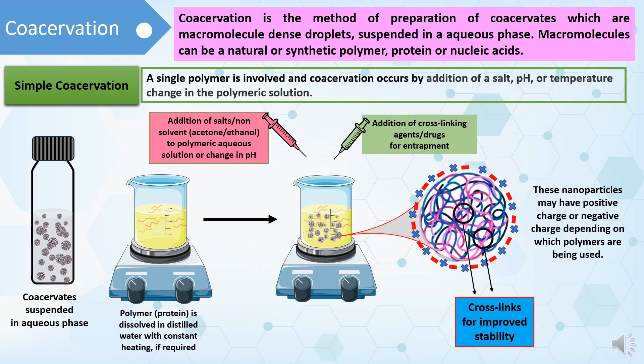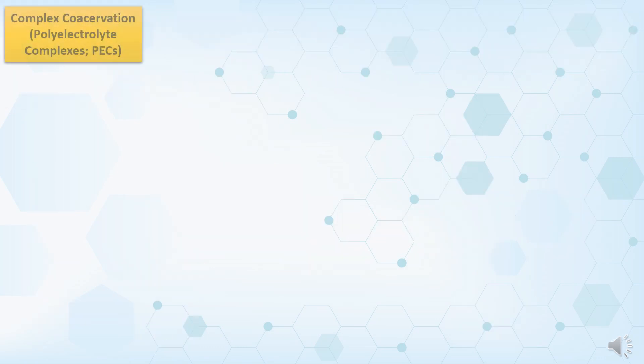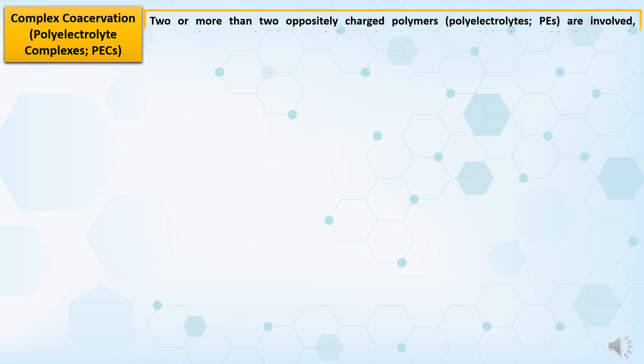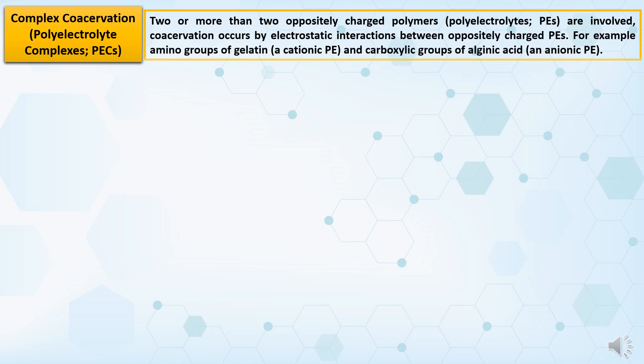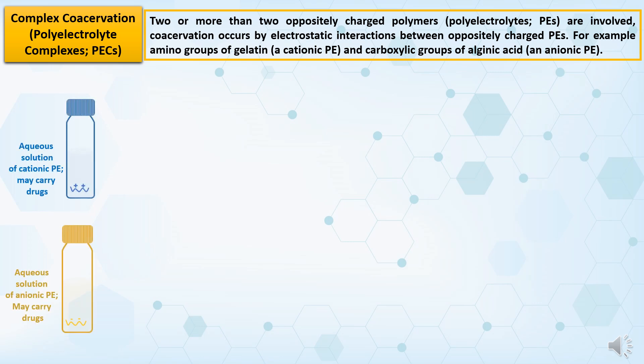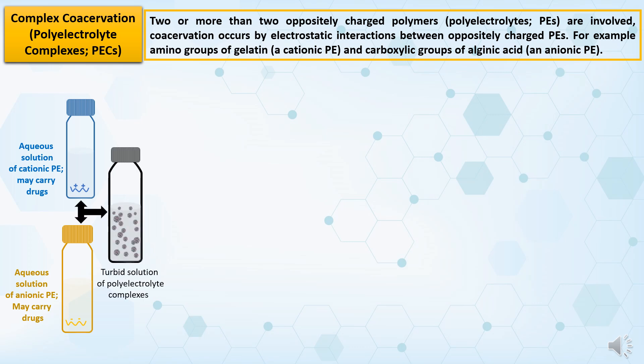These coacervates can have cross-links for improved stability. The second type of coacervation is complex coacervation. In this type, two or more oppositely charged polymers or polyelectrolytes are involved and coacervation occurs by electrostatic interactions between oppositely charged polyelectrolytes. For example, amino groups of gelatin, a cationic polyelectrolyte, and carboxylic groups of alginic acid, an anionic polyelectrolyte, interact to make complex coacervates at a particular pH. Complex coacervates are also known as polyelectrolyte complexes. Aqueous solutions of cationic and anionic polyelectrolytes, which appear as transparent solutions, are mixed together to get a turbid solution of complex coacervates or polyelectrolyte complexes.